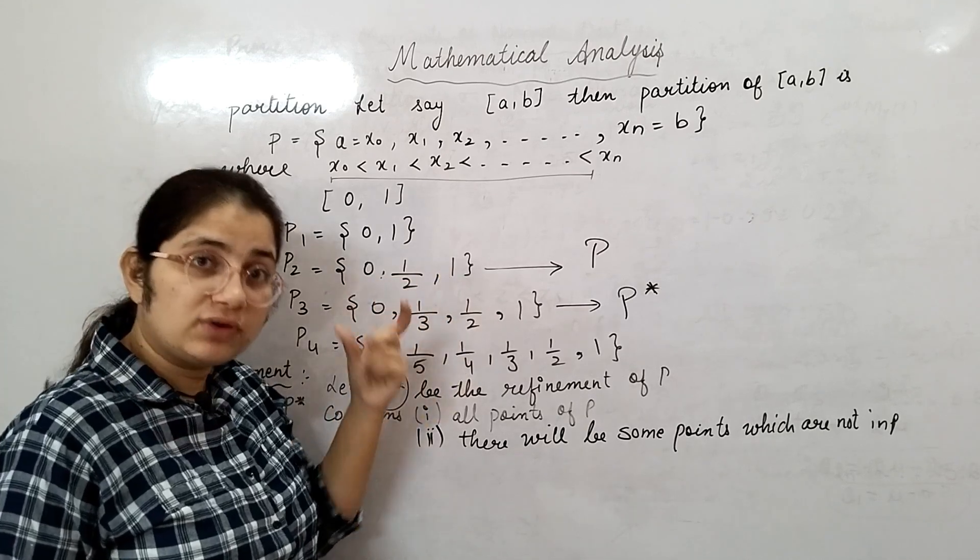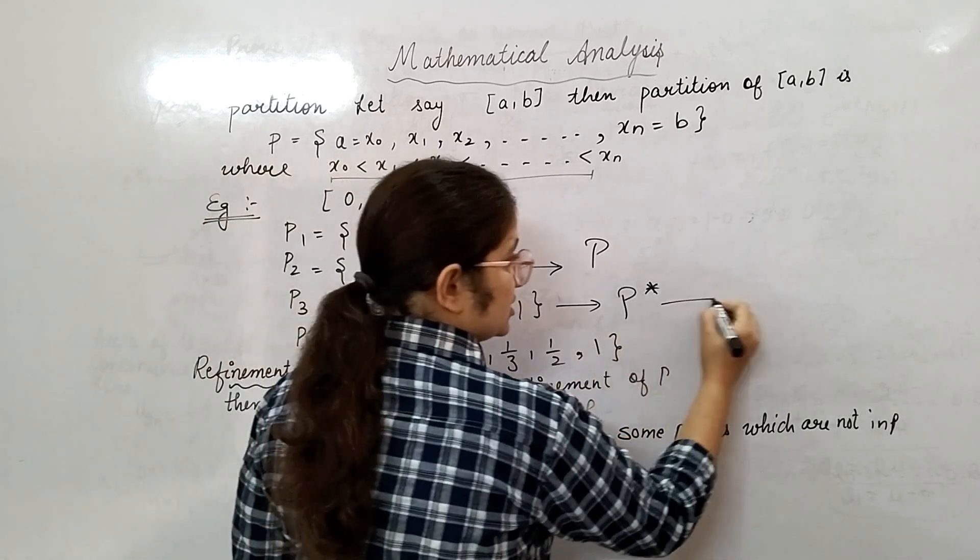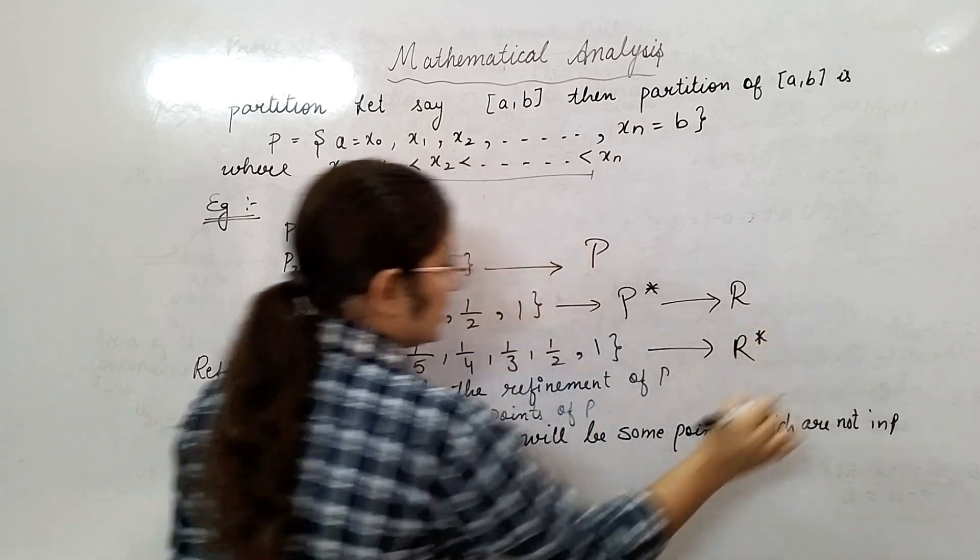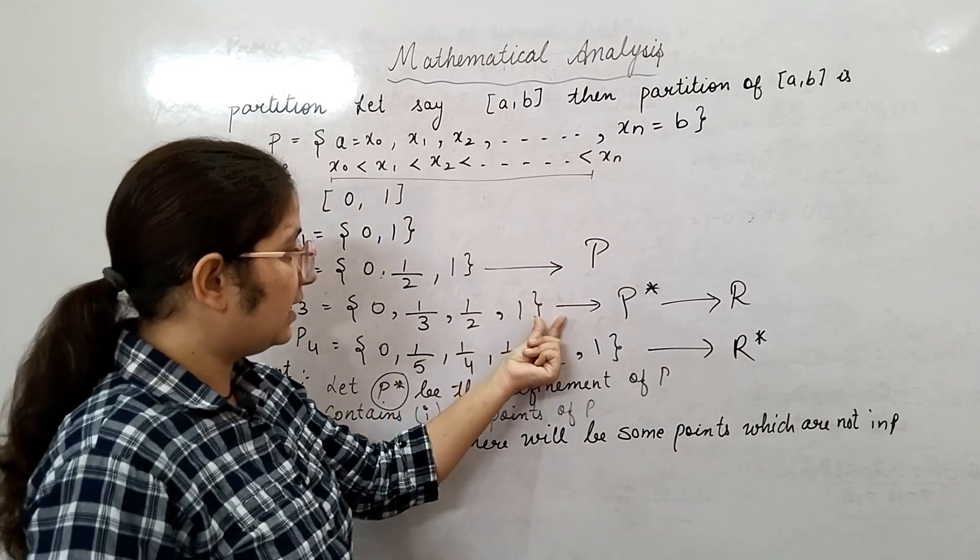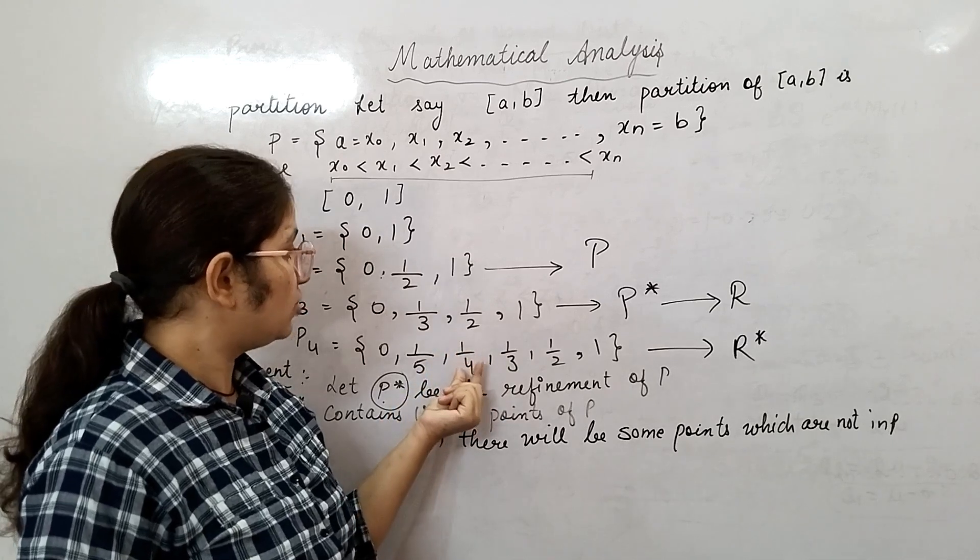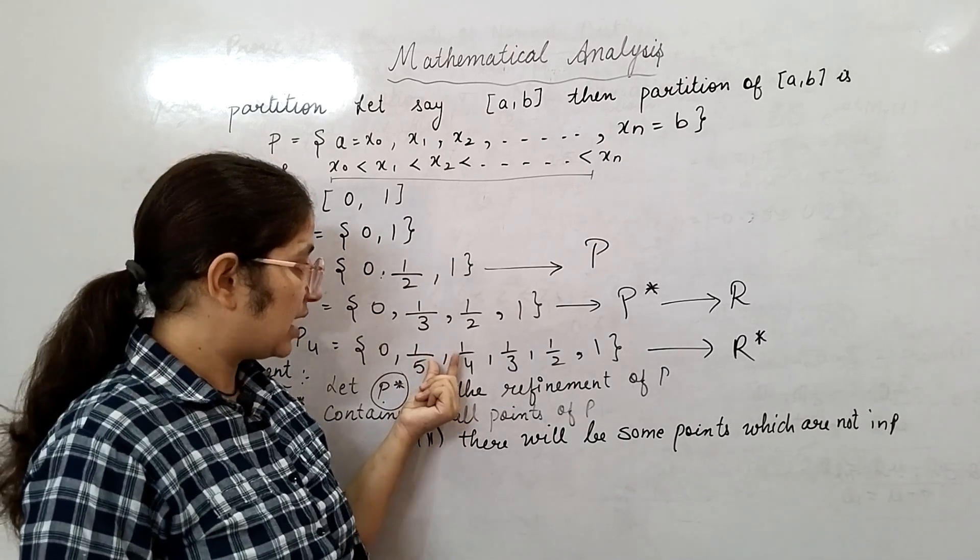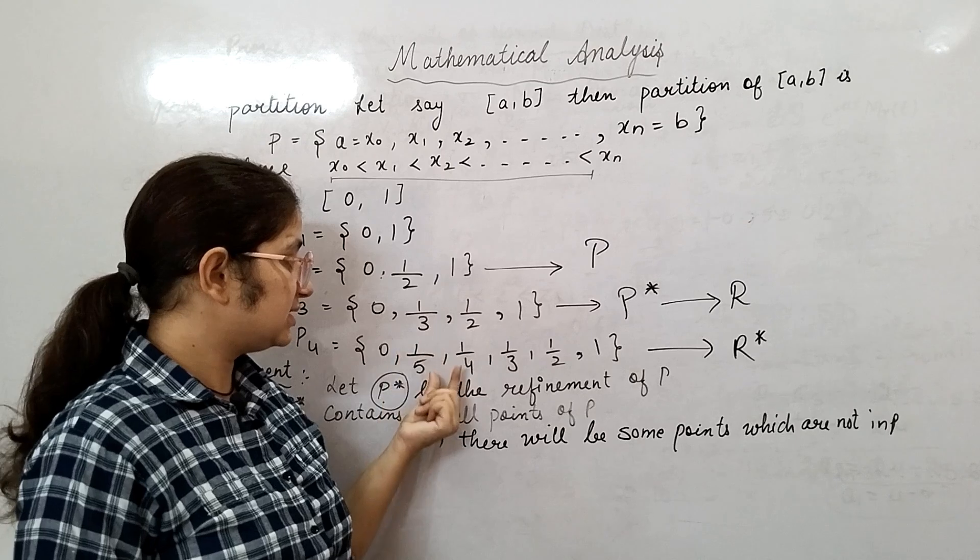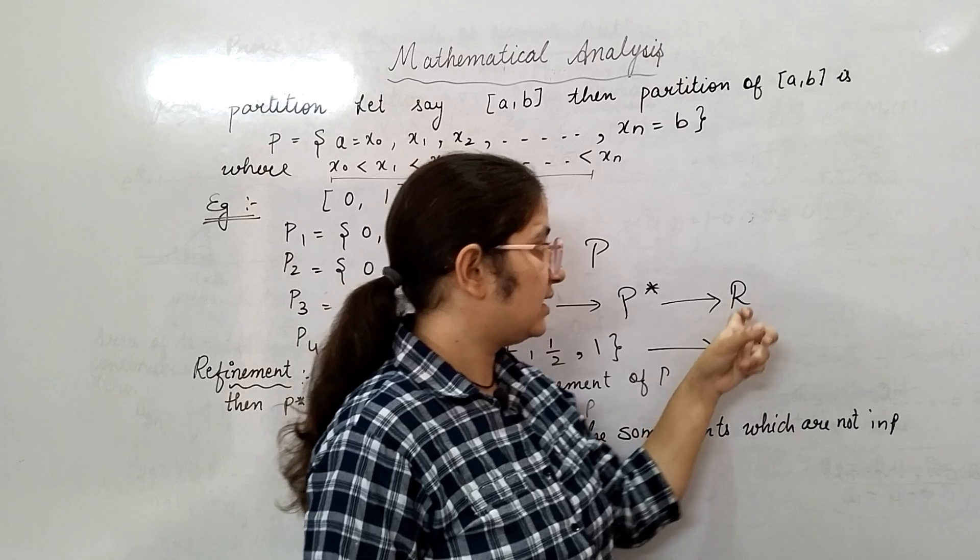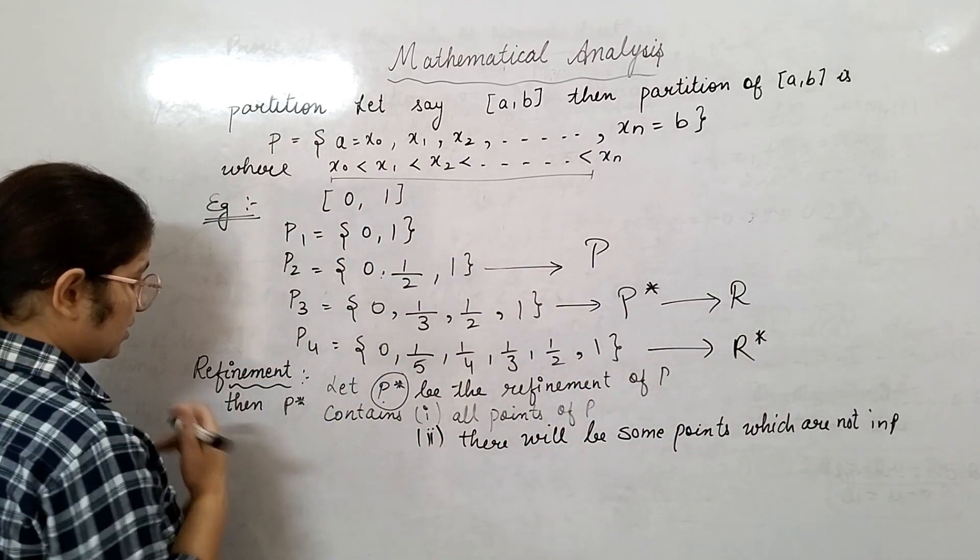Similarly, let this be R. So R* will be this, because it is containing all points of R and it is having two more points than R. This partition is having two points more than R: 1/5 and 1/4. So this will be R* and this will be R. So this is refinement.